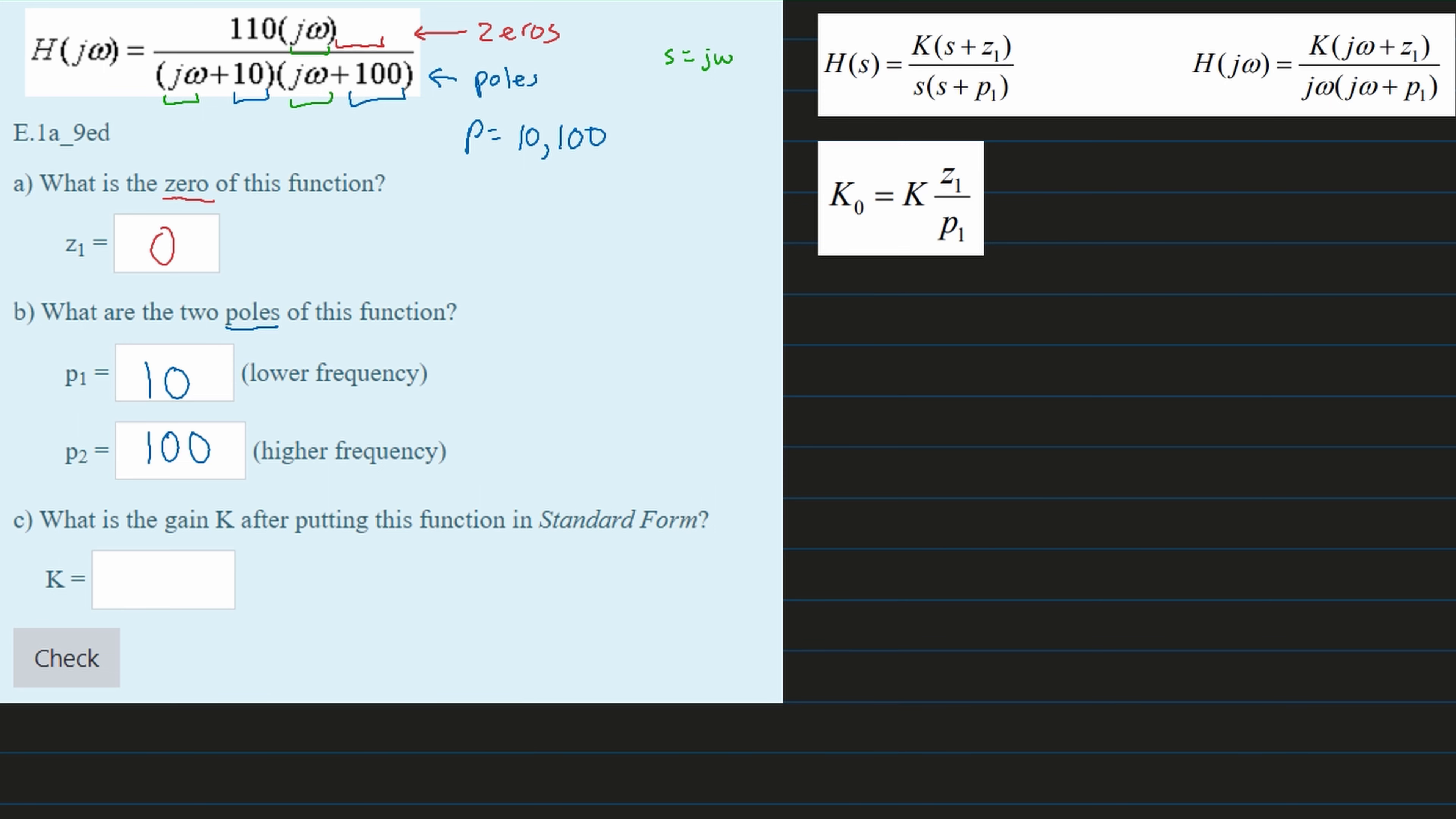So in here, we are going to rewrite this. We are going to have H(s), and this is equal to 100. And then we're going to have our s in here. And this is all divided by s plus 10, and then we're going to have s plus 100.